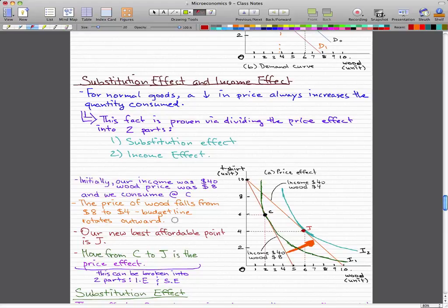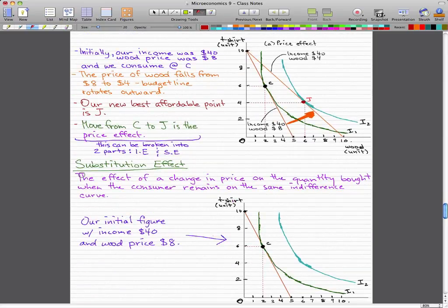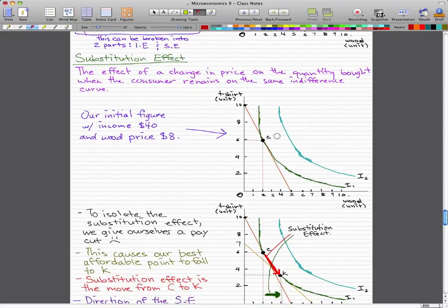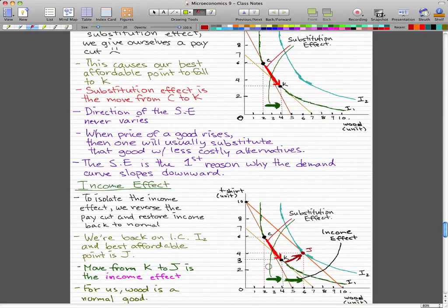So to do a recap of this whole thing in action as a buildup of the price effect: what happened is substitution effect happened first. There was a change in price and on the quantity bought, we remained on the same indifference curve. So from point C, we moved to point K. And then what happened after that is the income effect happened. Our income got restored and we moved from point K to point J to a new indifference curve, and now we are consuming more wood and more t-shirts than before. Because before we were consuming 3 t-shirts and 4 pieces of wood. But with more income, we now consumed 4 t-shirts and 6 pieces of wood. And that's as simple as that.